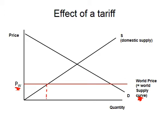Bring the world price line down where it intersects the domestic supply curve — this is what we supply domestically, call it Q1. Where it intersects the domestic demand curve, call it Q4. Q4 is what we are demanding at price PW, whether imports or domestically produced goods, since we assume they are completely identical and consumers are impartial. The distance between Q1 and Q4 is the imports before tariff.